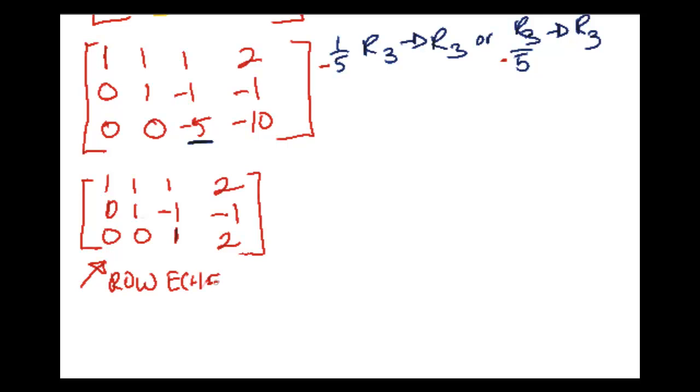So this is row echelon form. And if you remember, when you're doing Gaussian elimination, this is where you make your pit stop and you get off matrices, go back to x's. So what this tells me is x3 = 2. Where did that come from? Right here, third column pertains to x3, and what does it equal? It's 2.